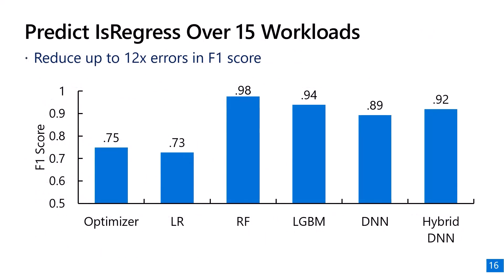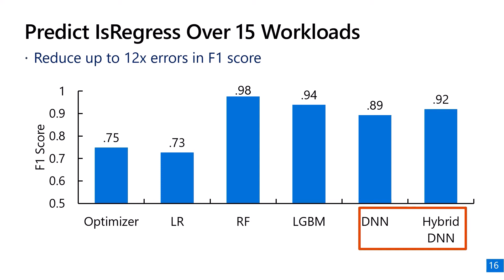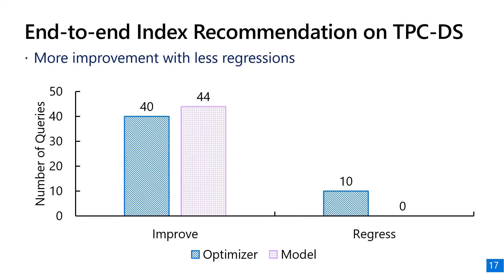We evaluate our technique over 15 workloads to predict query regressions. The figure shows the F1 score of the query optimizer, traditional machine learning models including linear model, random forest, and gradient boosted trees, and two customized deep neural network-based models. The machine learning model reduces errors by up to 12 times in F1 score compared with the query optimizer. Integrated with the original DTA, with the original DTA we get 40 queries improved but 10 with significant regression; with the machine learning model, we improve more queries with similar improvement and without query regressions.